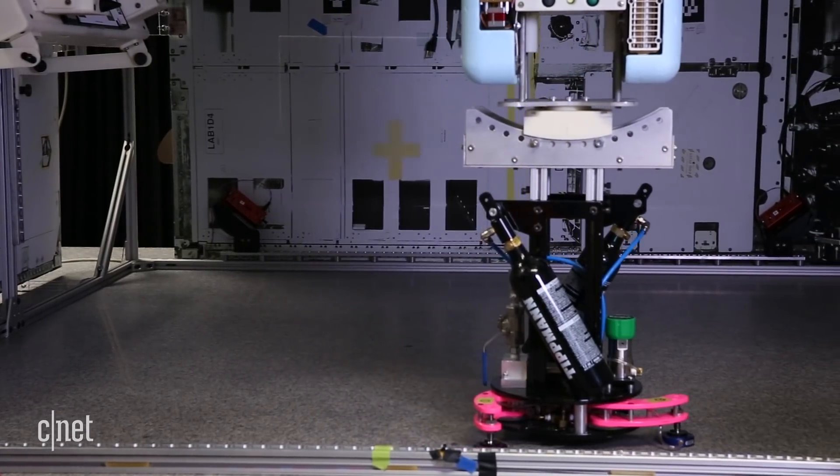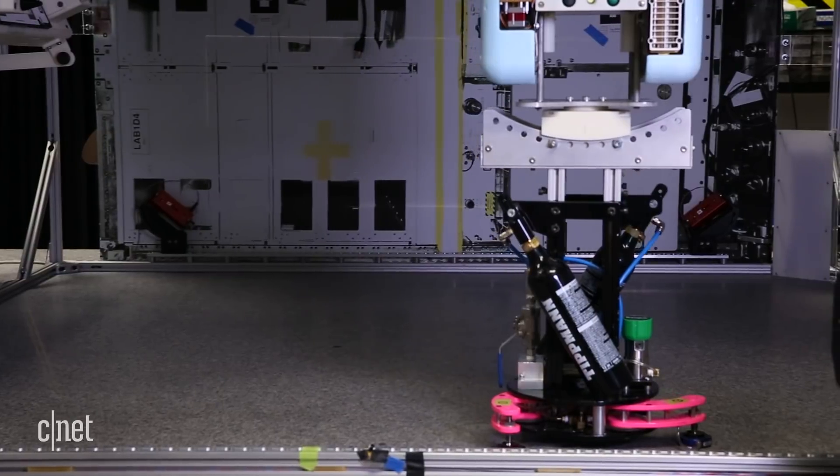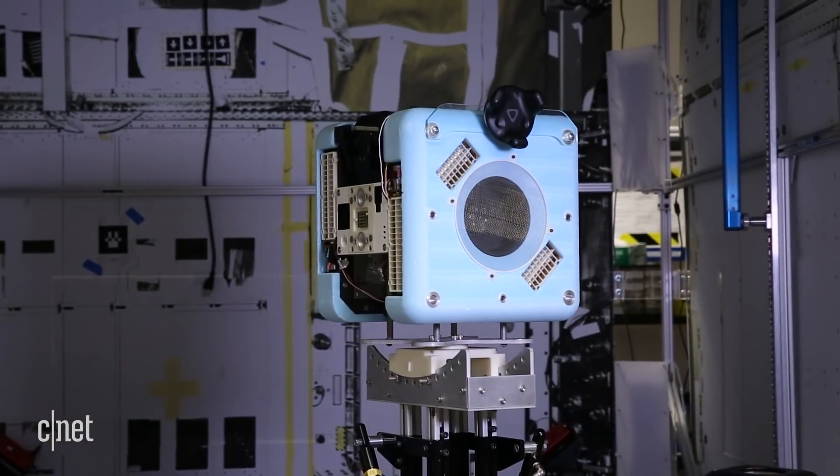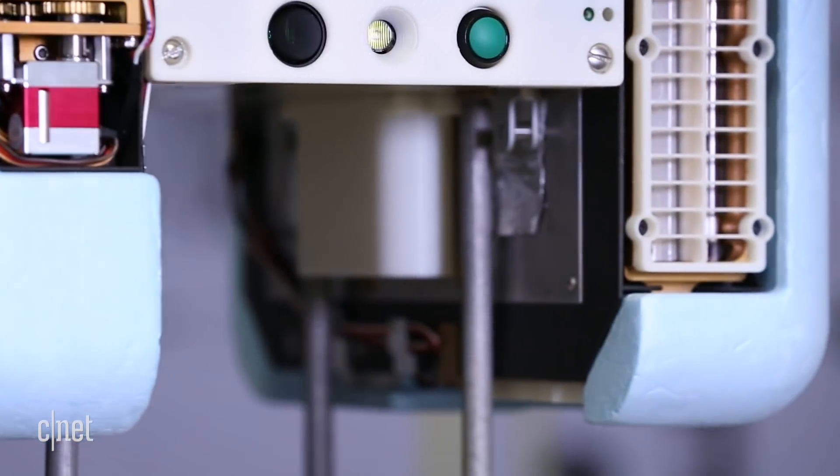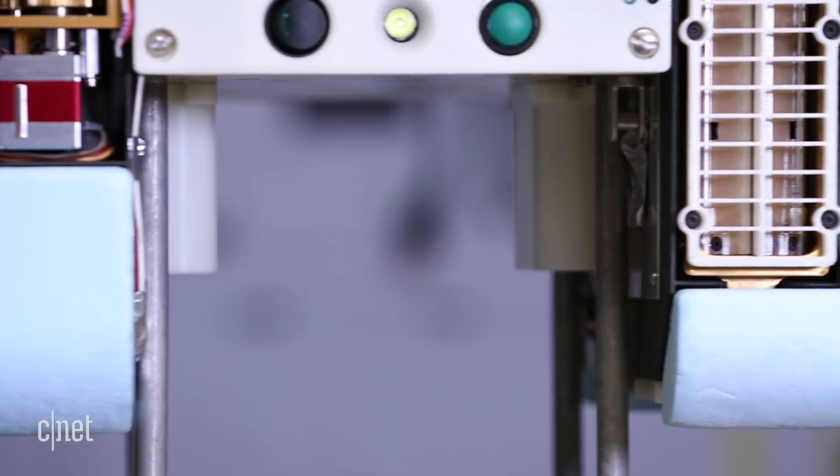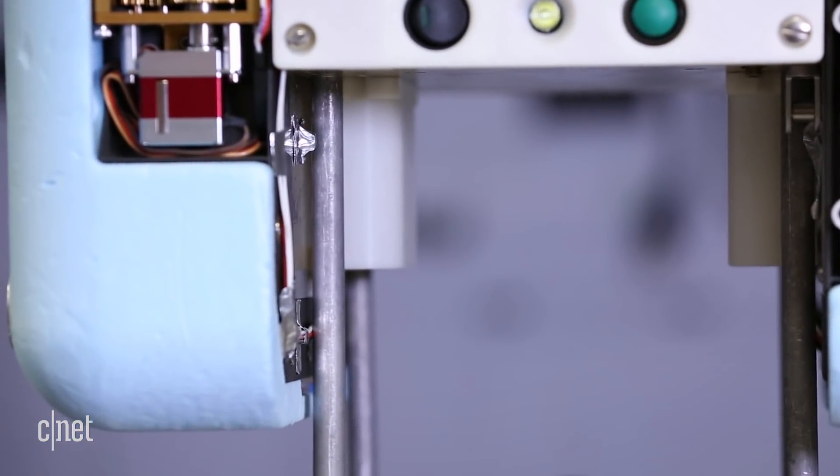It's a mobile camera platform that can go anywhere inside the space station to visualize what the astronauts are doing or what different parts of the space station are doing. It can also support the astronauts in doing procedures and different types of maintenance tasks. It's very much like the Roomba of the space station.